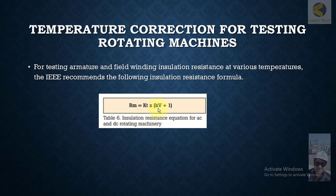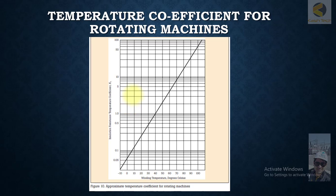The formula is RM equals KT times KV plus one. Table 6: insulation resistance equation for AC and DC rotating machinery. This is just an example I have shown you from IEEE. They are recommending this formula.